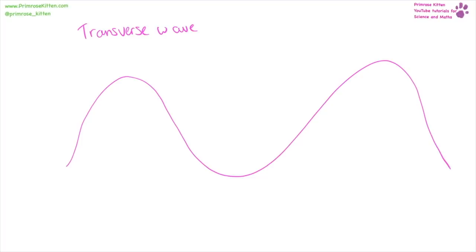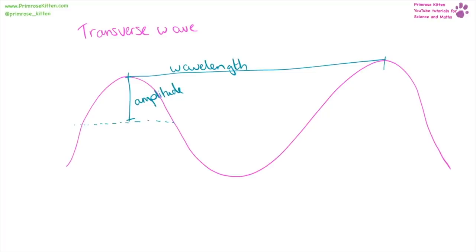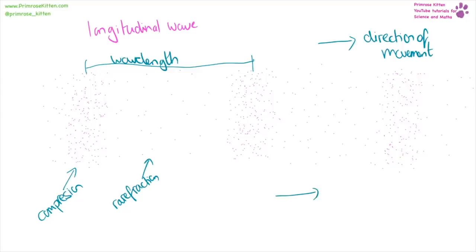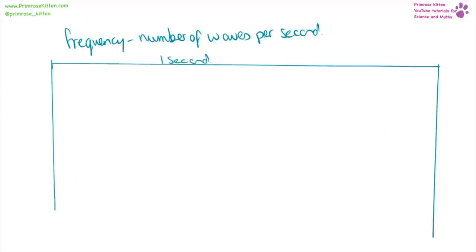A transverse wave goes up and down. The wavelength is measured from one equivalent point to another. The amplitude is measured from the middle to the top, or from the middle to the bottom. The direction of movement is up and down — also called the direction of oscillation — and the direction of energy transfer is sideways. In a longitudinal wave, we have areas of compression and areas of rarefaction. The direction of movement is side to side, and so is the direction of energy transfer. Frequency is the number of waves per second.